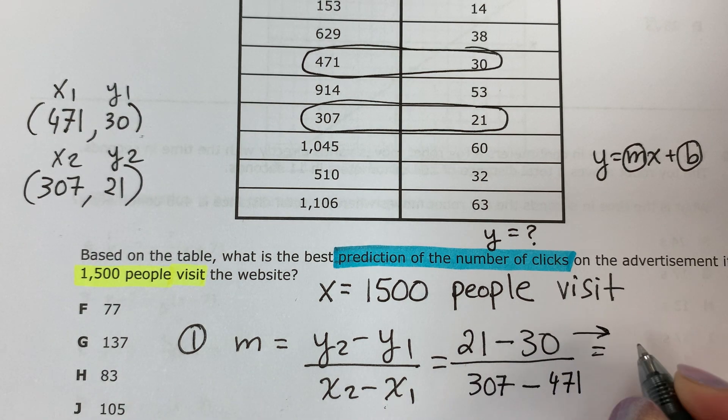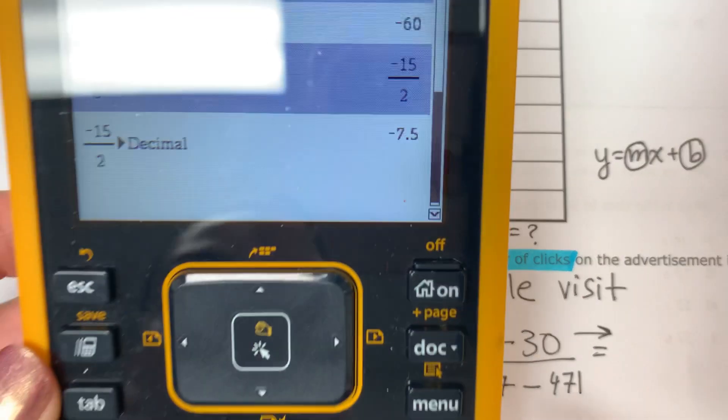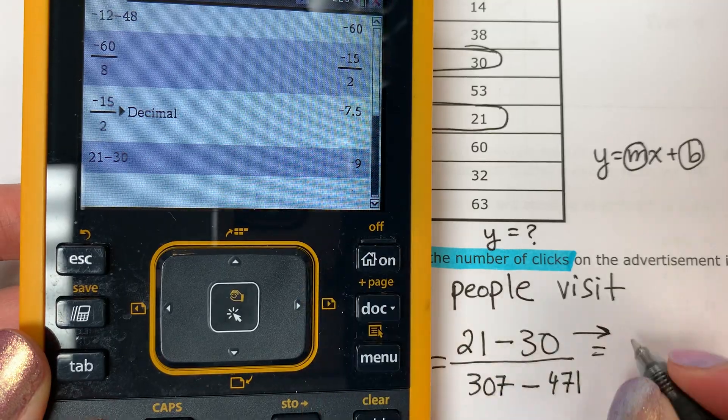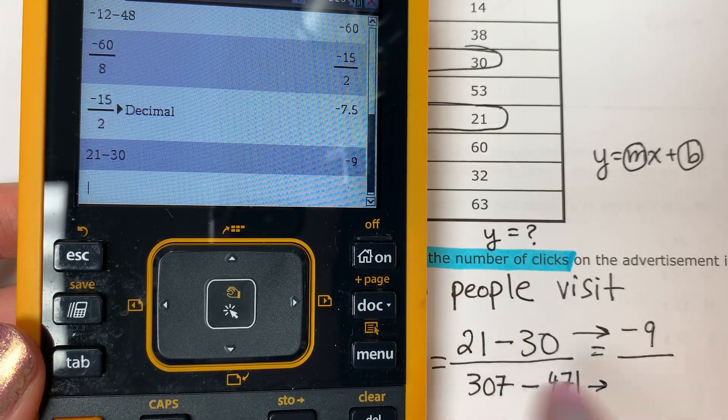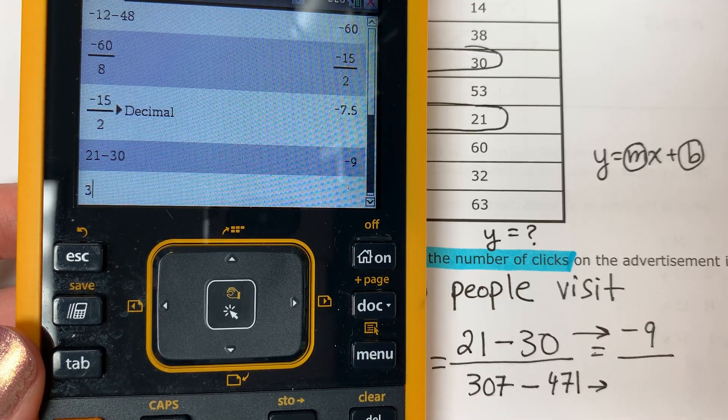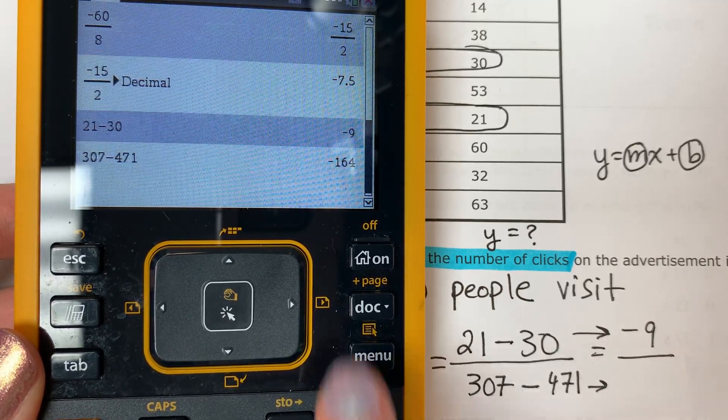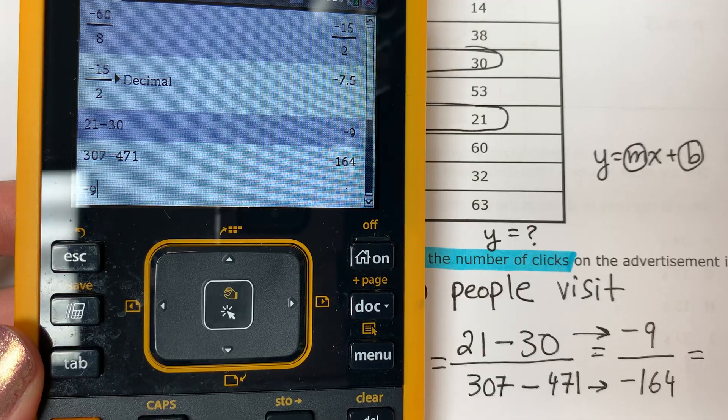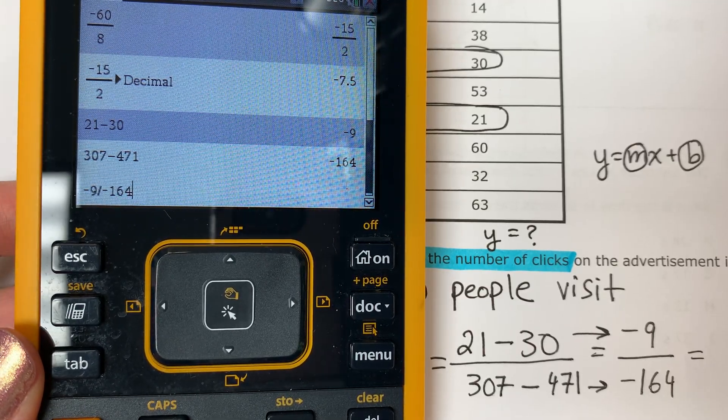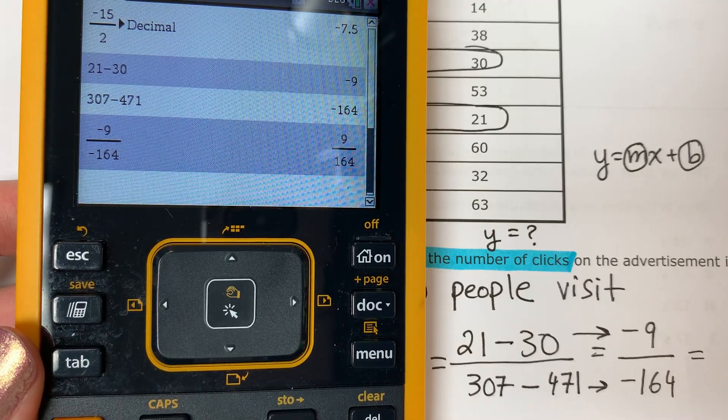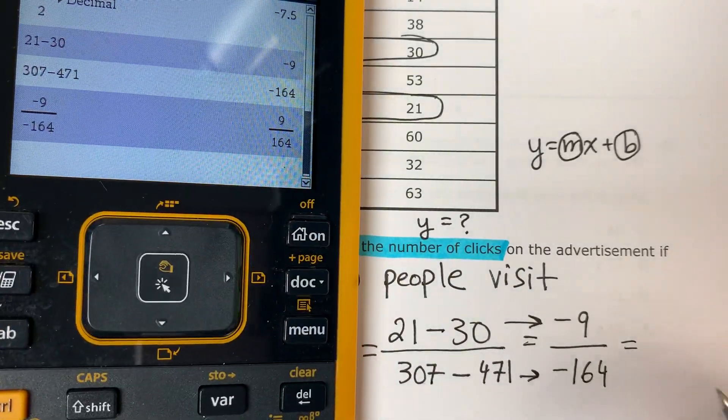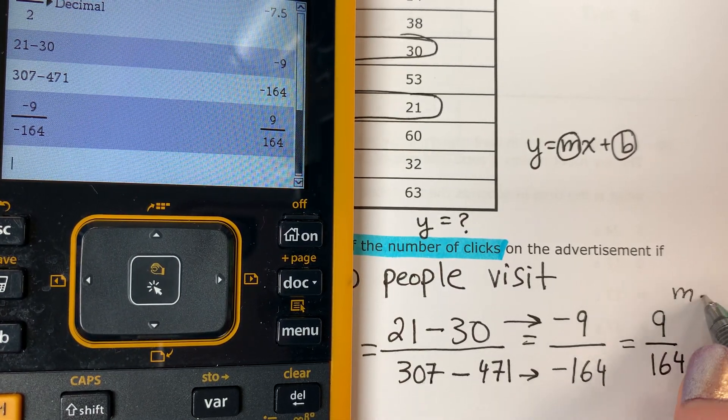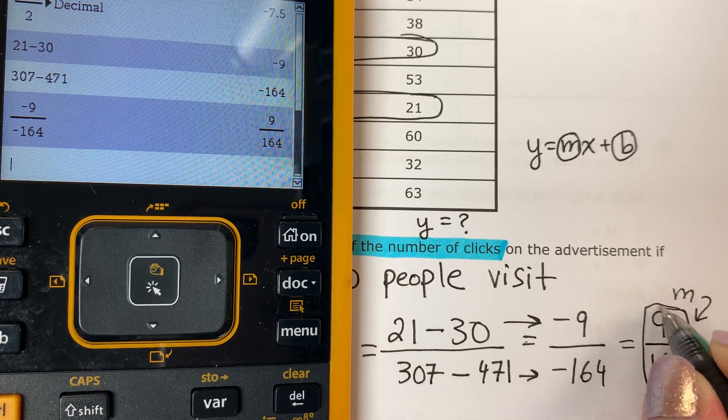21 minus 30, negative 9. 307 minus 471, negative 164. All together, negative 9 divided by negative 164. 9 divided by 164. That is my M. I have M. Now I need B.